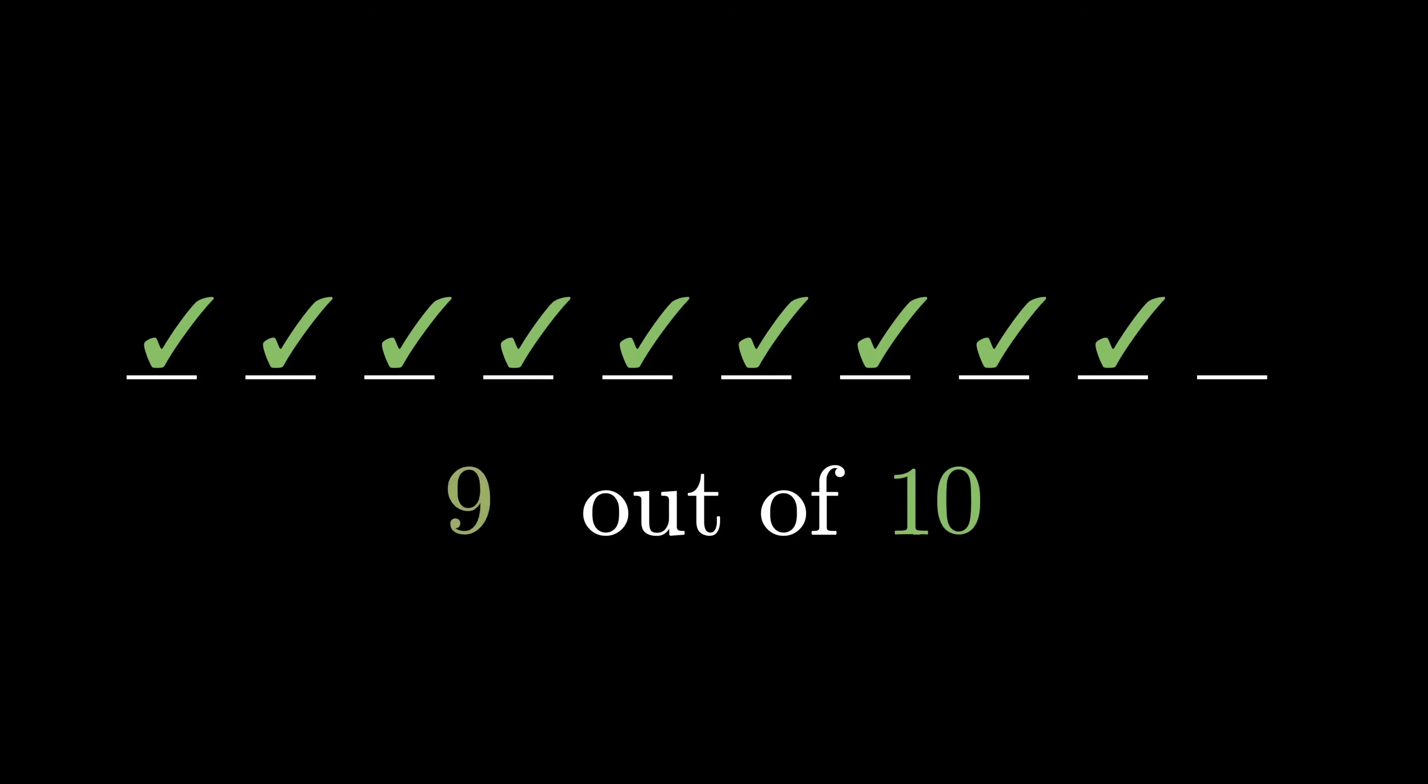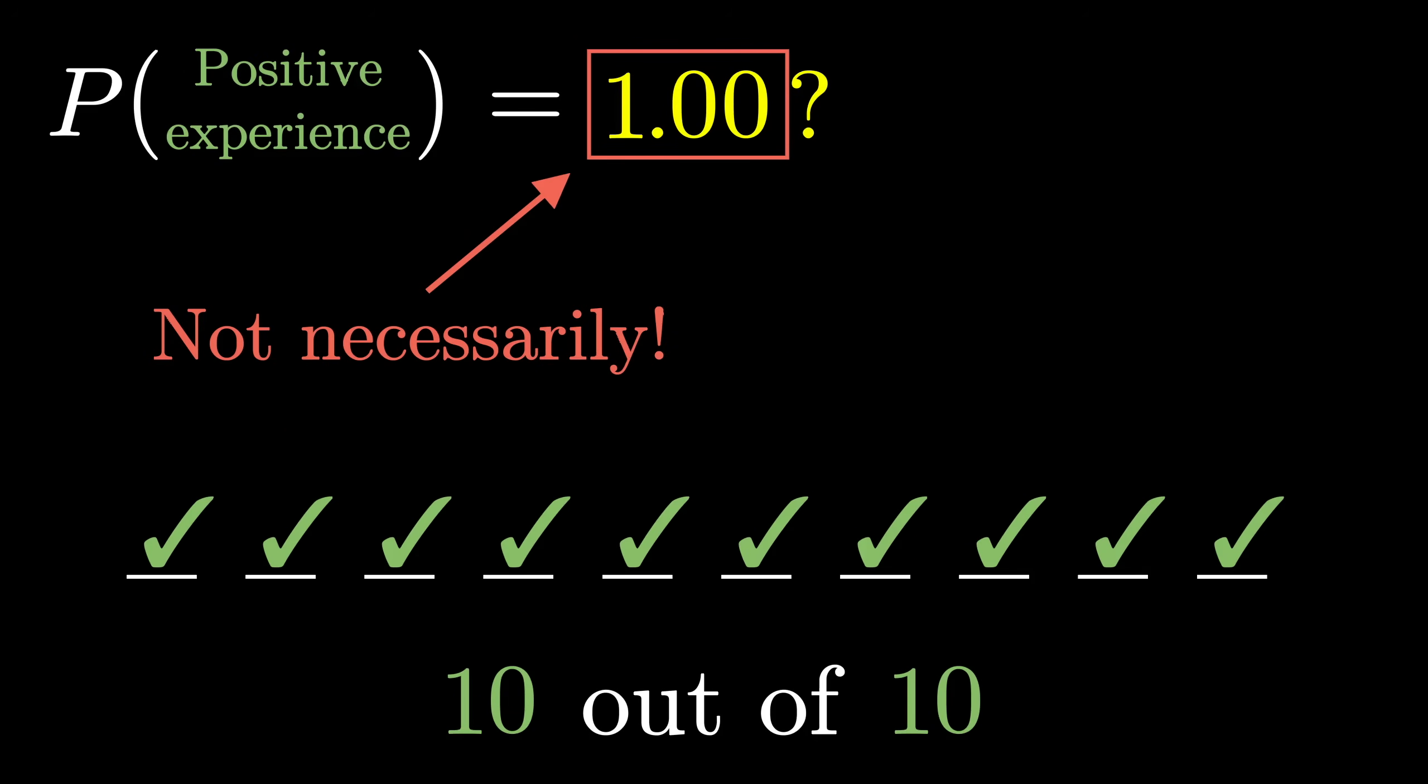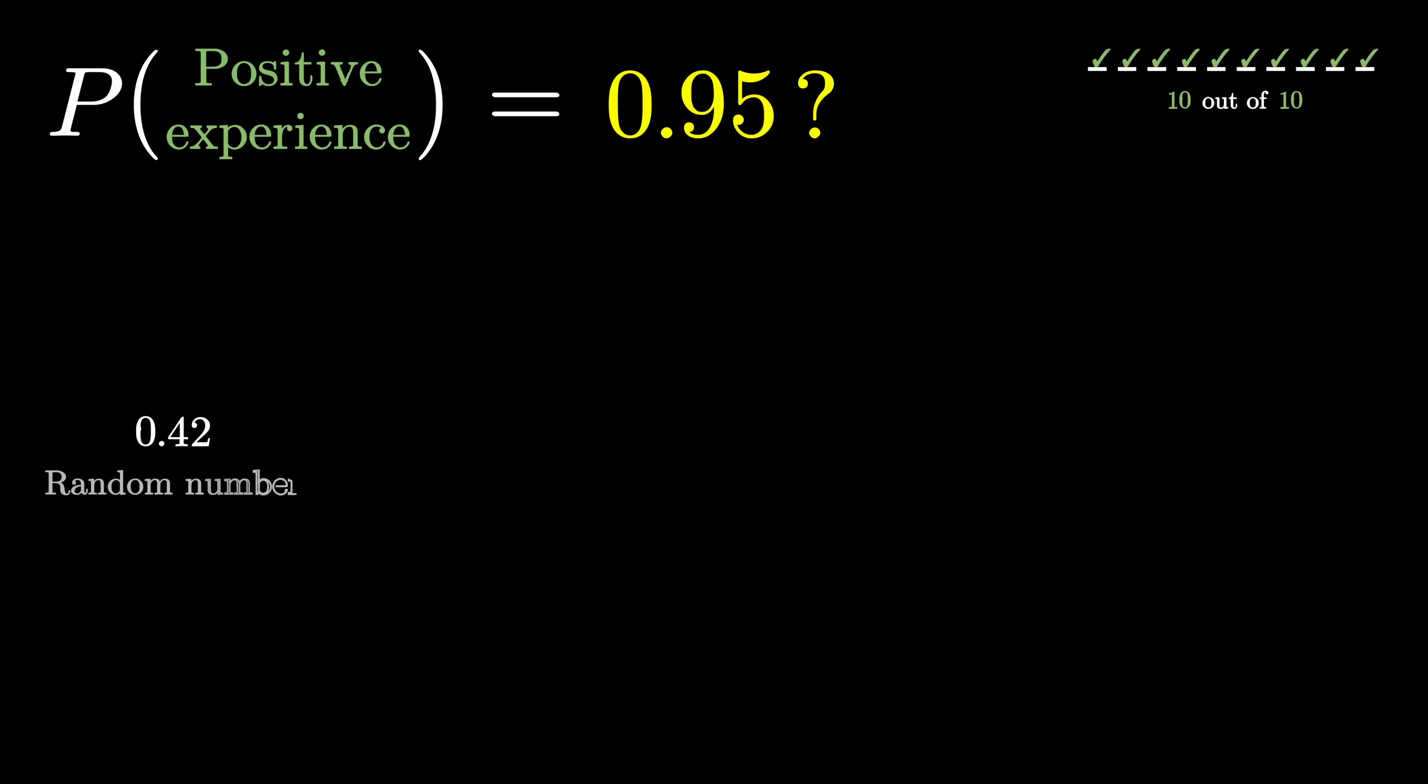When you see that first rating of 100% with 10 reviews, that doesn't mean the underlying success rate is 100%, it could very well be something like 95%. And just to illustrate, let me run a little simulation, where I choose a random number between 0 and 1, and if it's less than 0.95, I'll record it as a positive review, otherwise record it as a negative review.